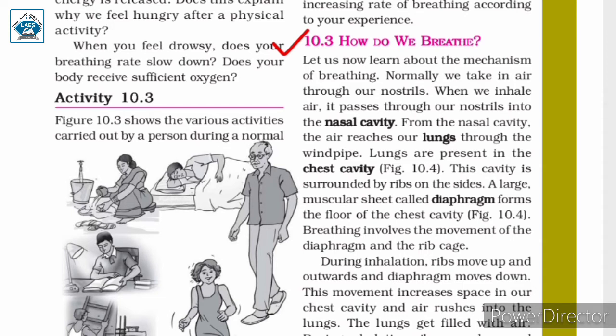Now let us learn about the mechanism of breathing. Normally, we take in air through our nostrils. When we inhale, air passes through our nostrils into the nasal cavity, then reaches our lungs through the windpipe. The lungs are present in the chest cavity, which is surrounded by ribs on the sides. A large muscular sheet called the diaphragm forms the floor of the chest cavity. Breathing involves the movement of the diaphragm and the rib cage.